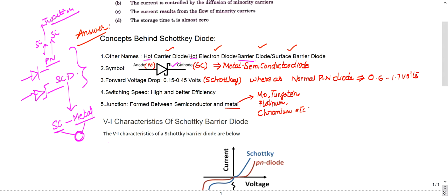So to summarize, the Schottky diode is made from a semiconductor and a metal. The forward voltage drop is about 0.15 to 0.45 volts, whereas in a normal PN junction diode the forward voltage drop is 0.6 to 0.7 volts.